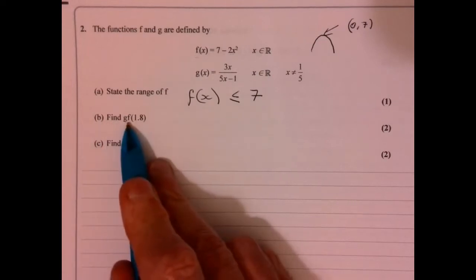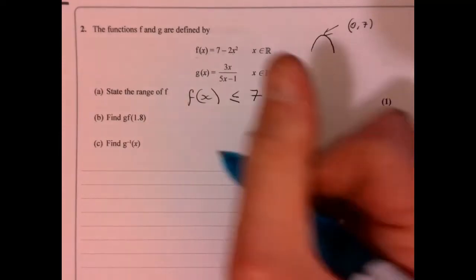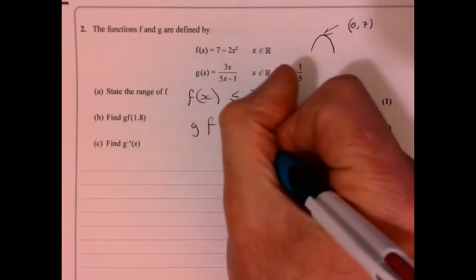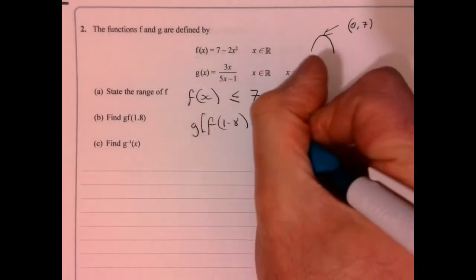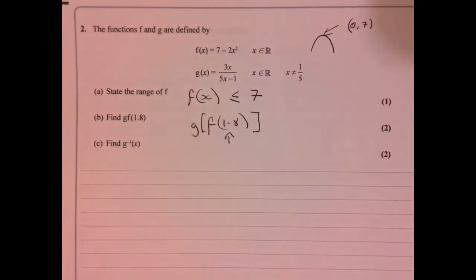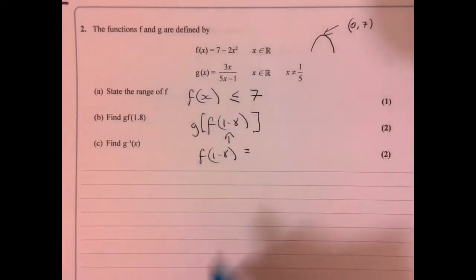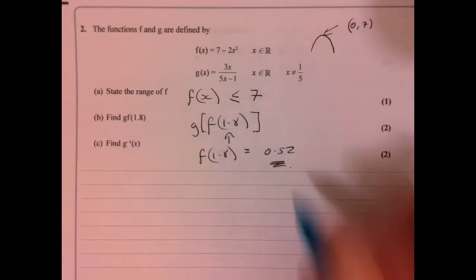Part B. Let's make some sense of this. How I write this down is think of it like this - do that bit there. First of all, let's do f(1.8). If we work out what that is, just pop 1.8 into this up here, and that equals 0.52.